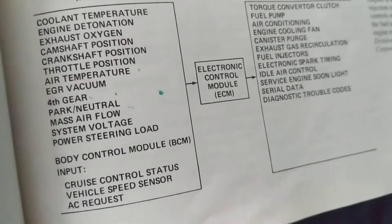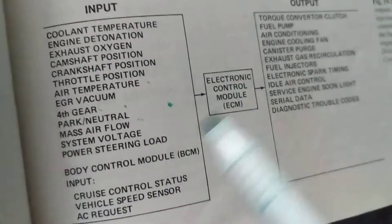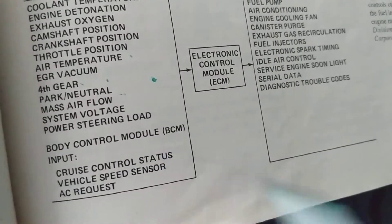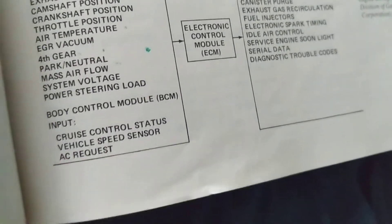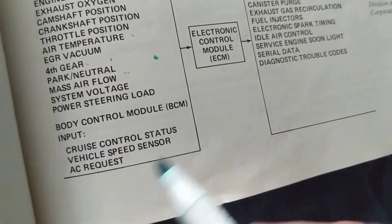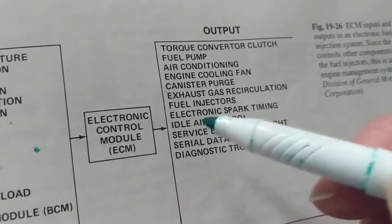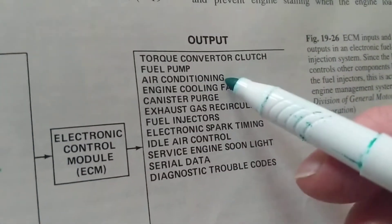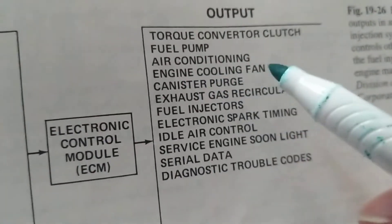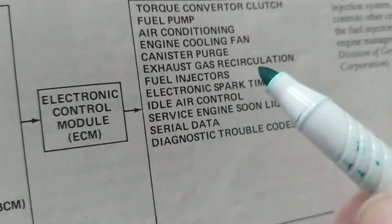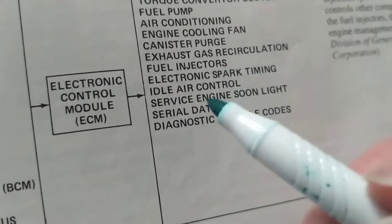The body control module handles accessories — lights, power windows, and similar things. Other inputs include cruise control status, vehicle speed sensor, and AC request. The outputs — what the computer commands — include: torque converter clutch, fuel pump, air conditioning clutch relay, engine cooling fan, canister purge for fuel vapor, exhaust gas recirculation, fuel injectors, electronic spark timing, and idle air control.